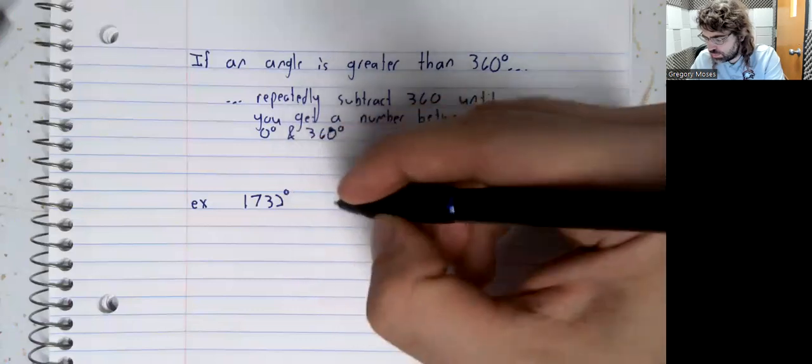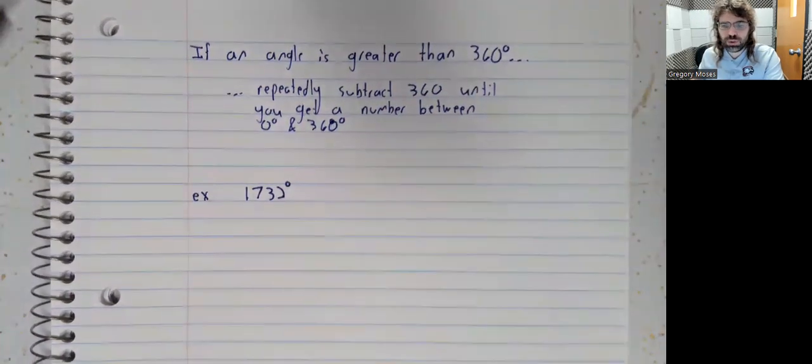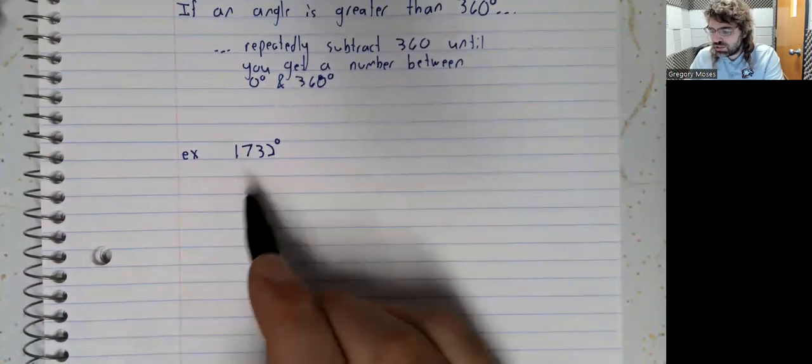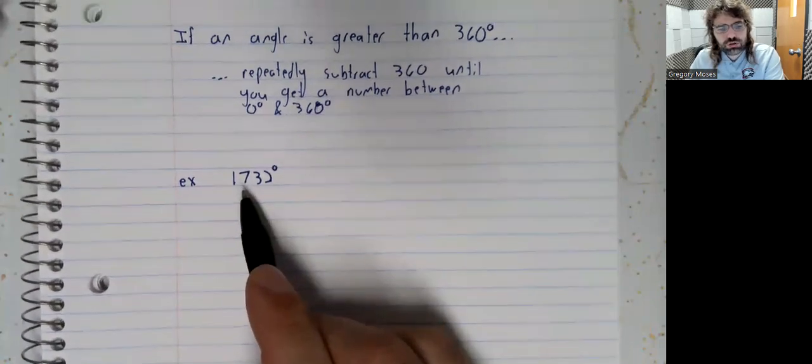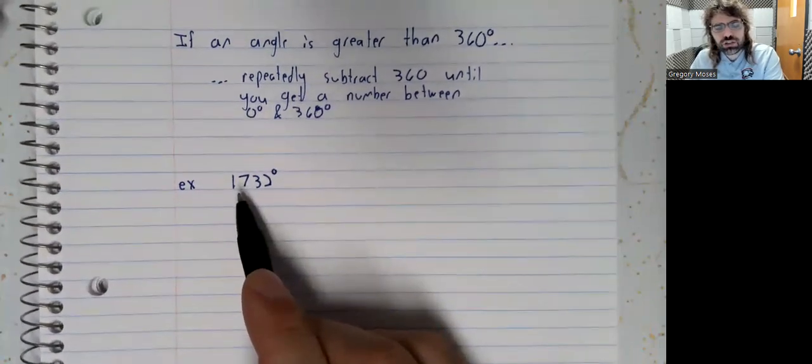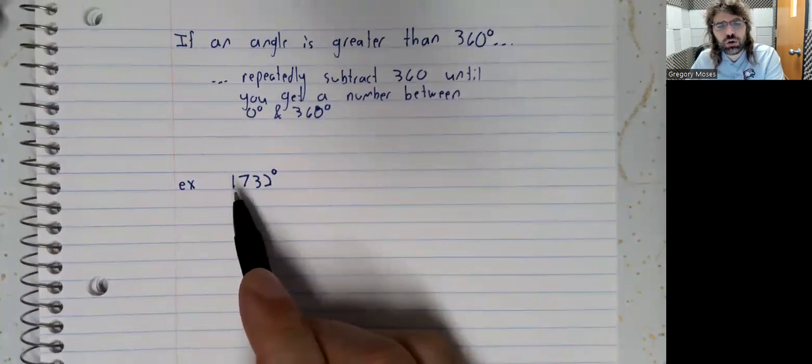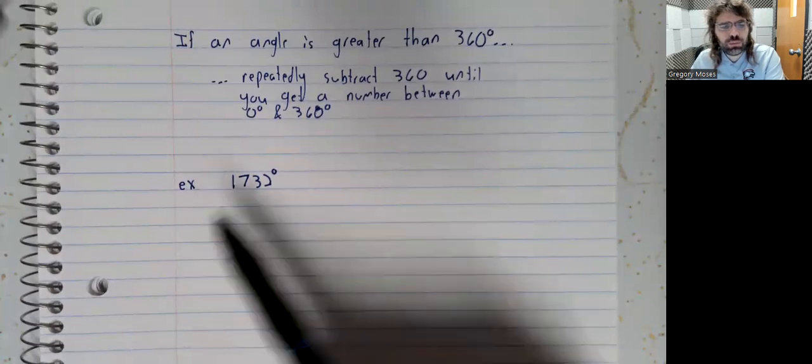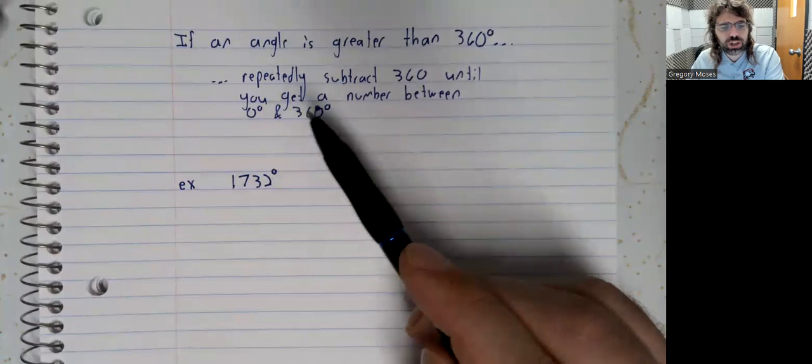Just coming up with an example, let's take 1732 degrees, and let's find a co-terminal angle between 0 and 360.